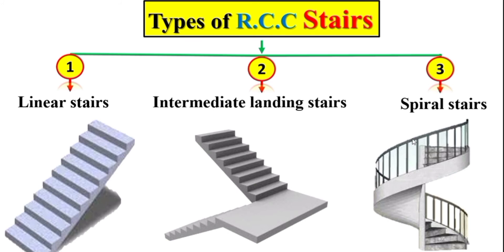The spiral stair is a special type not frequently used, for two reasons. First, spiral stairs are less comfortable than linear and intermediate landing stairs. Second, the execution of spiral stairs is more difficult. Nowadays, linear and intermediate landing stairs are the most frequently used in both residential and public structures.